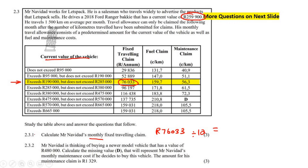Dividing by 12 gives us 6,336 rand and 8 cents. Mr. Navidad is thinking of buying a newer model vehicle with a different value. Calculate the missing value D, which will represent Mr. Navidad's monthly maintenance costs if he decides to buy this vehicle. The amount for his maintenance claim is 1,329.